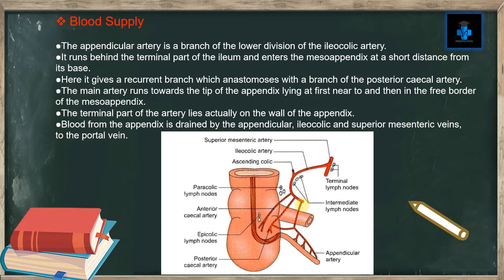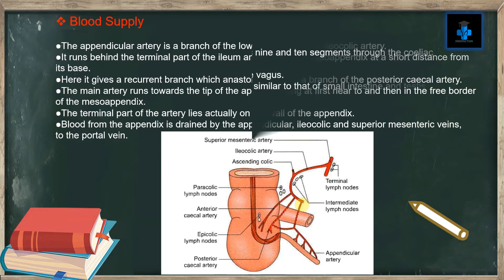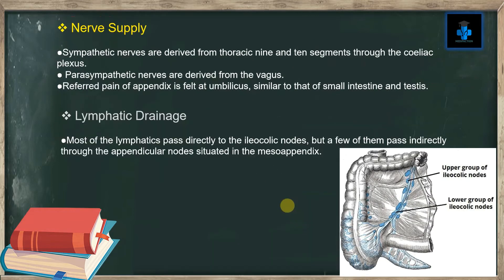Blood from the appendix is drained by the appendicular, ileocolic, and superior mesenteric veins to the portal vein. Nerve supply: sympathetic nerves are derived from thoracic segments 9 and 10 through the celiac plexus. Parasympathetic nerves are derived from the vagus. Referred pain of the appendix is felt at the umbilicus, similar to that of the small intestine and testes.